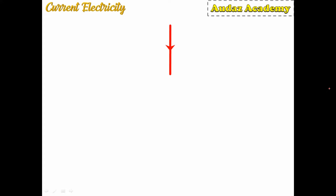Now let's see an example of Kirchhoff's current law. The current through the first conductor i1 equals 10 amperes, and through the second conductor i2 is 5 amperes. Both currents flow towards the junction, so they are positive. The third conductor i3 originates from the junction of i1 and i2.